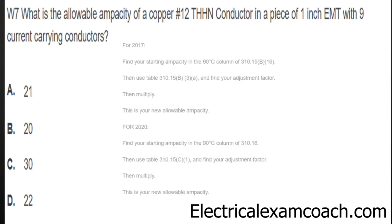Let me do the 2017 example — the same thing will apply in the 2020 and 2023, just the table names have changed. What you do is start by finding ampacity in the 90 degrees C column of 310.15 B16, our primary ampacity table.